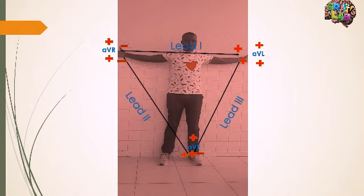In summary, this is how the limb leads work. Remember, you cannot see these leads physically — it is the ECG machine itself that shows you the leads. Your only job is to place the electrodes.